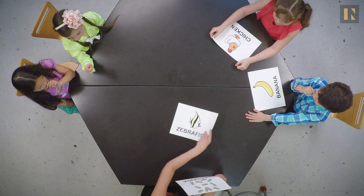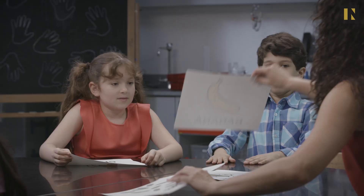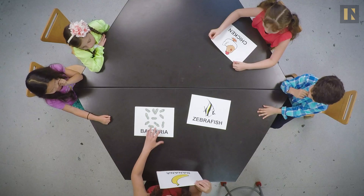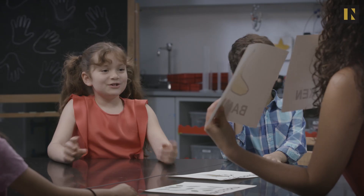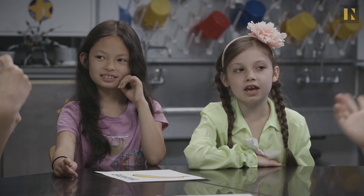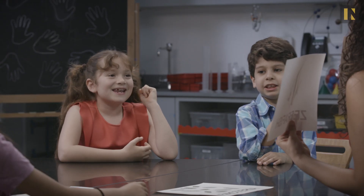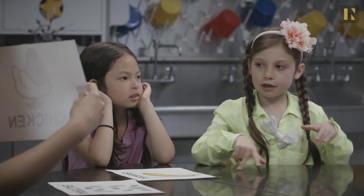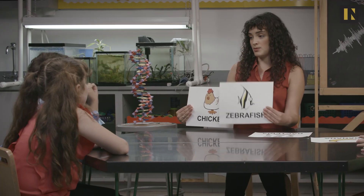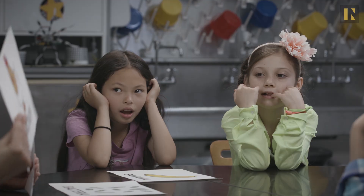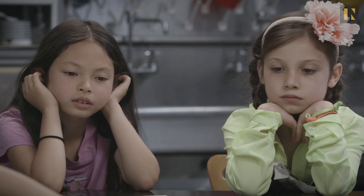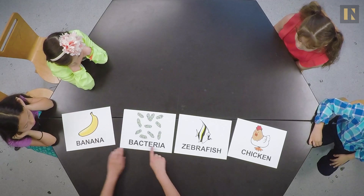So we have four different organisms and we want to rank them from most similar to least similar DNA to us. What's more similar? Zebrafish. Okay, we'll put zebrafish here and bacteria here. Banana versus bacteria — what do you think is more similar to us? Bacteria. So bacteria here, banana there. Chicken — what's more similar to us, chicken or banana? Chicken! Zebrafish or chicken? Chicken — because a chicken can walk, but zebrafish can't walk. They can swim and we can swim. I think a chicken because we eat more chicken. So the final order: banana, bacteria, zebrafish, chicken.